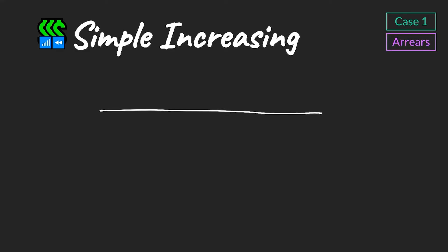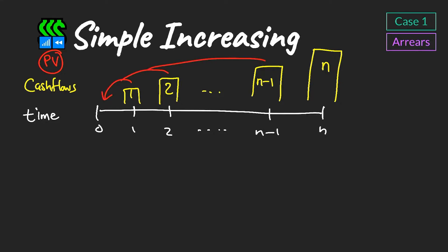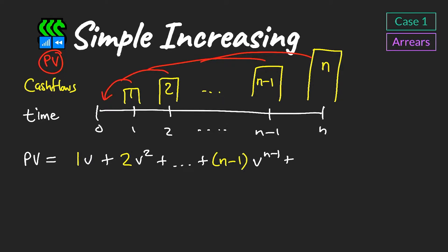We start by drawing out our timeline and showing what the cash flows would be at each different time point. We see that we start with a cash flow of one, then two, and so on, so the cash flows increase by a simple amount of one each time period. We want to discount all of these cash flows to time zero. We write out the cash flows and apply a discount factor for the relevant period to each cash flow, giving us line number one.